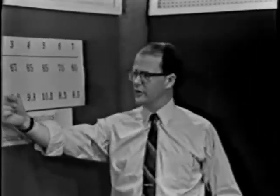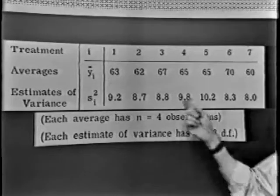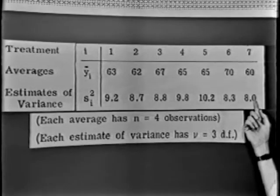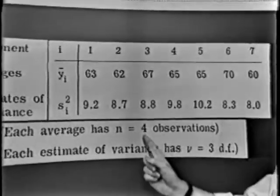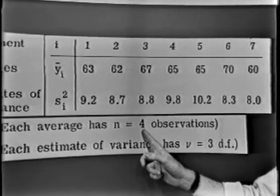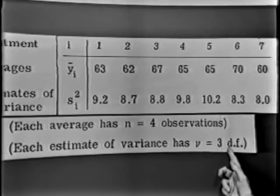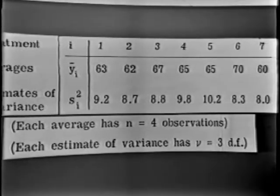There were in all seven averages. There they are. And here are the seven independent individual estimates of the variance. Each one of these averages is based on four observations. There are four little rods manufactured and tested in each case. And so as a consequence, each estimate of the variance will have only three degrees of freedom.